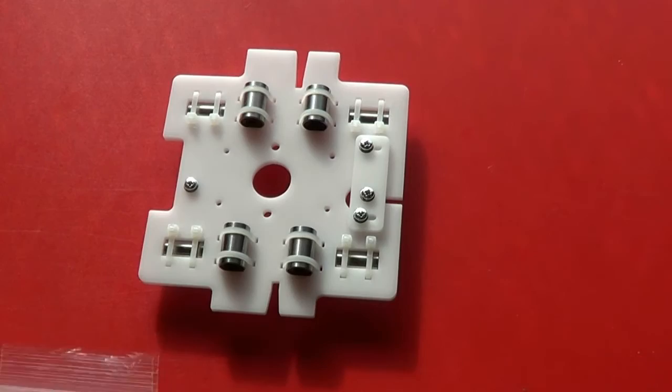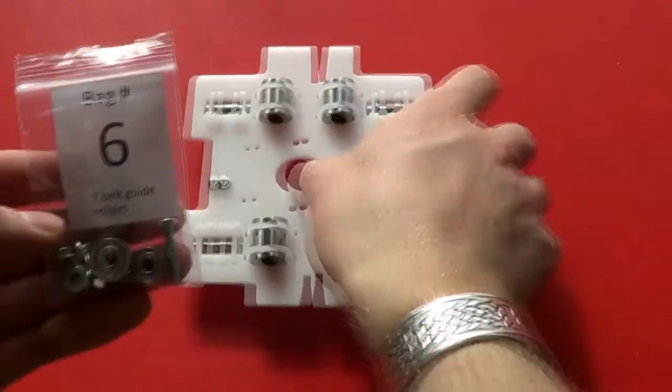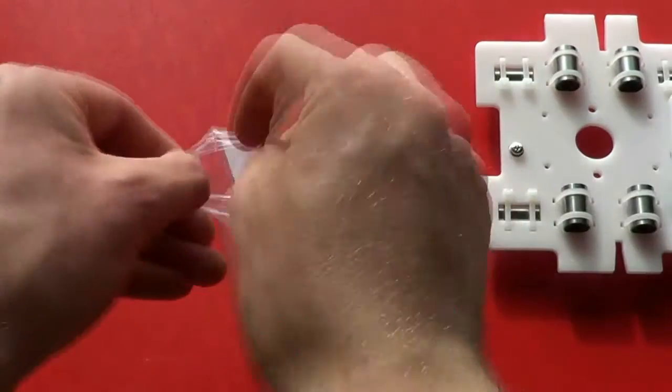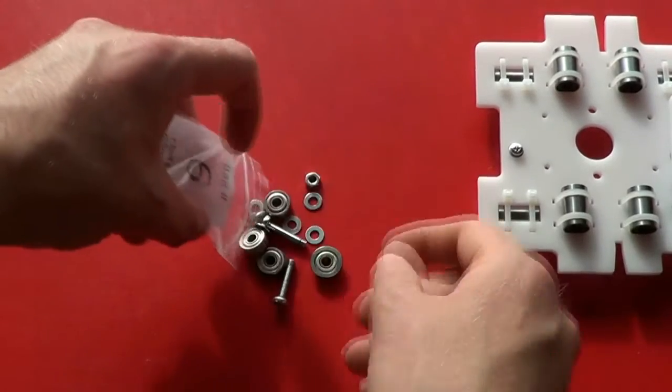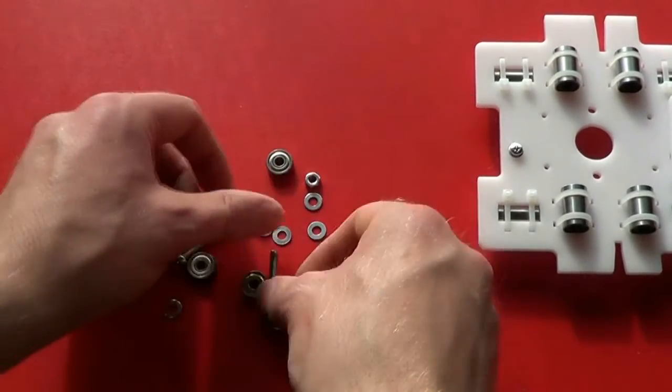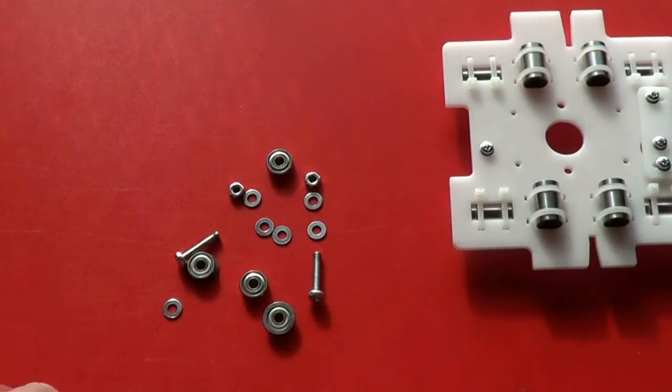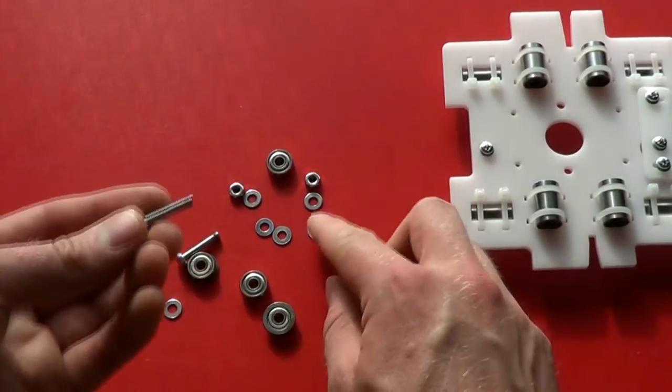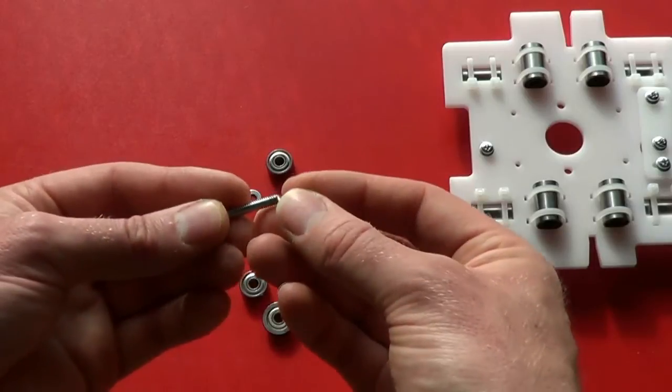So now we're going to do the Y-belt guide rollers, which are in bag 6. So take one of the screws, put on a washer first.